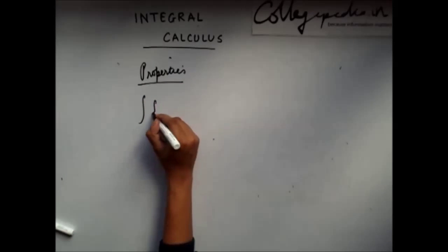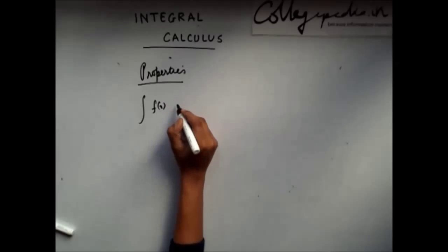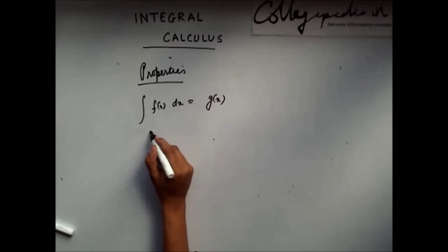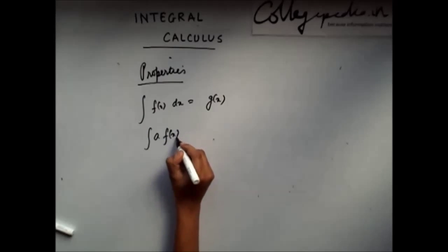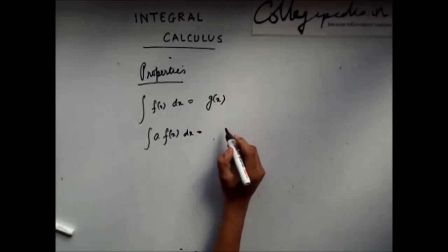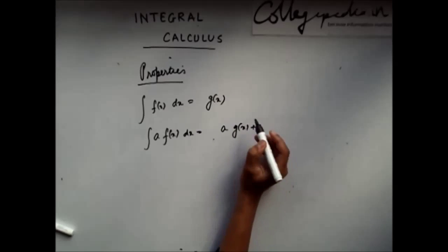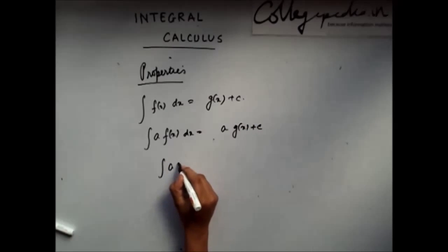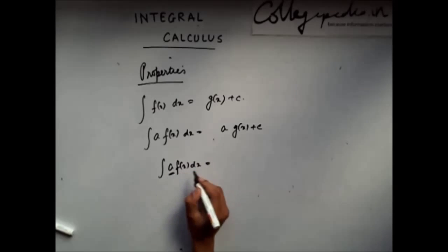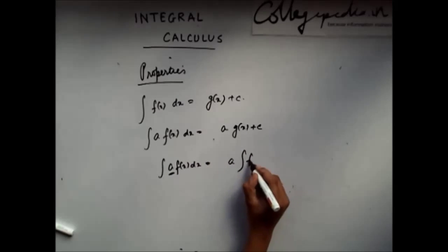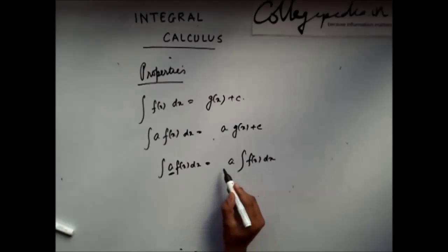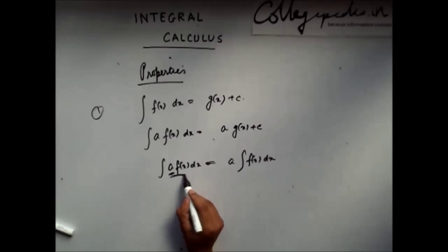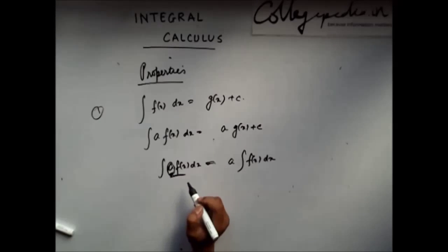The first property is: if I integrate a function f(x) and get g(x), then if I integrate a constant a multiplied by f(x), the answer will be a times g(x). The conclusion is that you can take the constant out of the integration.